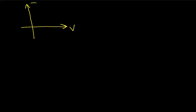Let's start with the VI curve for a voltage source with a voltage Vs across it. The idea behind a voltage source is that no matter what current goes through it, the voltage across it will always be Vs. So in terms of our VI curve for this voltage source, that's a straight vertical line — no matter what the current through that voltage source is, the voltage across it will always be Vs.